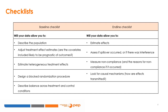The endline survey must estimate effects. It can assess if spillover occurred or if there was interference. It can measure non-compliance and look for causal underlying mechanisms that explain how the treatment was transmitted.